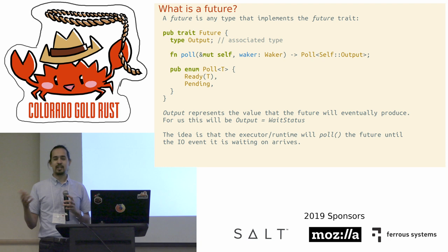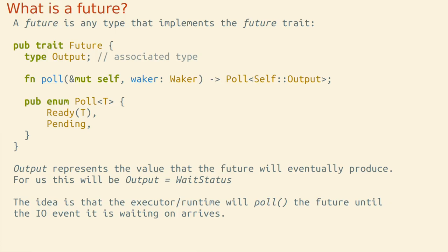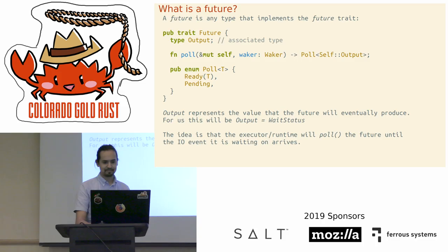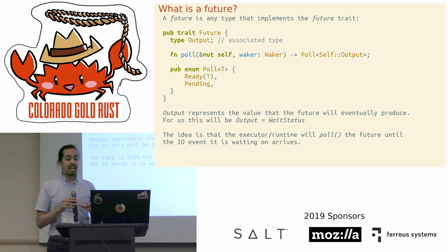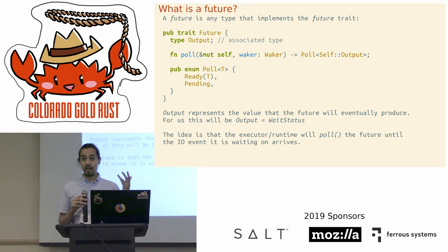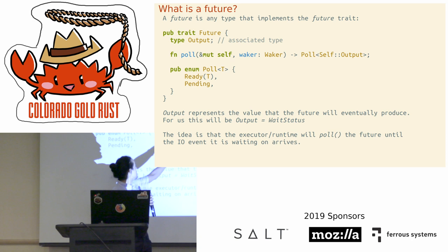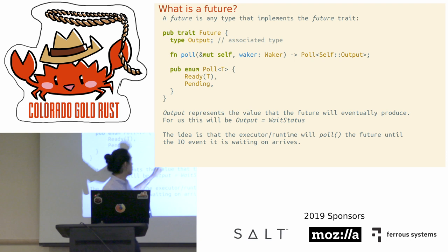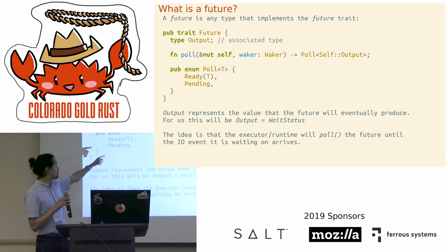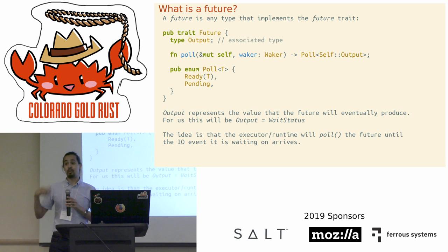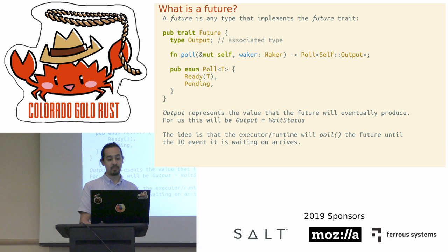What is a future in code? It's very simple — it's just a trait. The Future trait has an associated output type, which will be the value eventually yielded once the computation or I/O completes. For us, Output equals WaitStatus. The executor or runtime will poll this future until the I/O event arrives. The poll method takes self and a waker, and returns Poll — a simple enum that's either Ready with a value T, or Pending, saying the computation hasn't arrived yet.